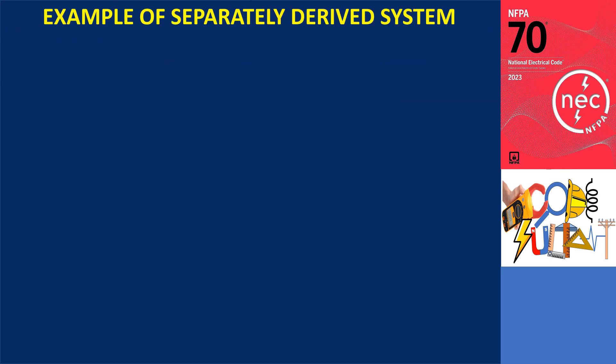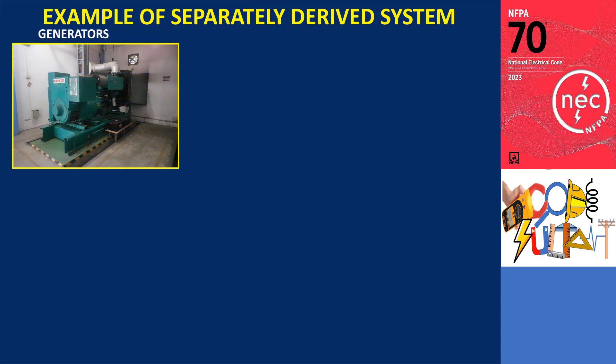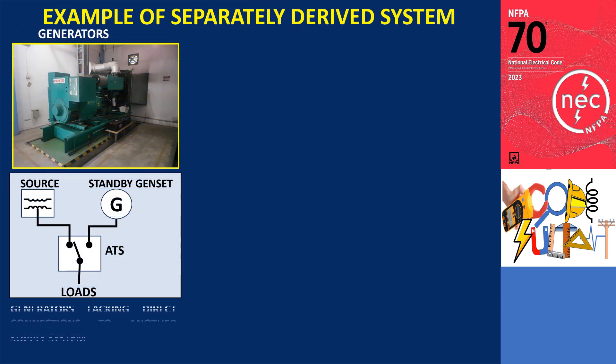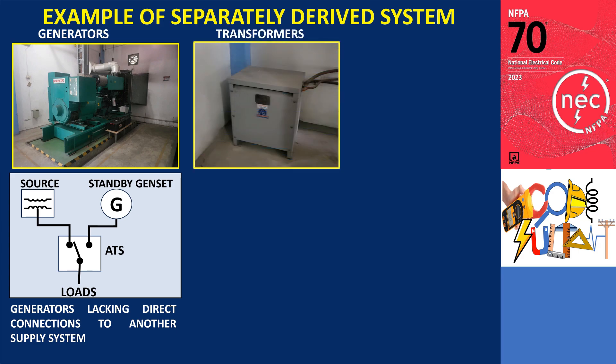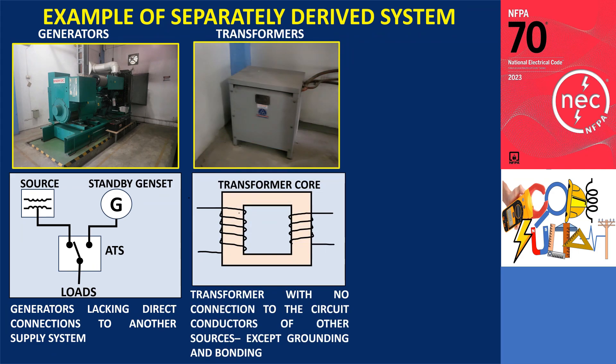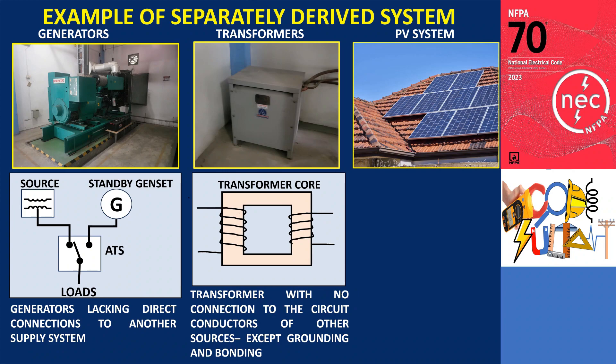Here are a few instances of such systems. This includes standby or emergency generators where the neutral isn't linked to the utility or any other source. Also included are transformers where the primary and secondary windings are electrically isolated but magnetically linked through a common core, resulting in no direct connection between them except for grounding and bonding connections.